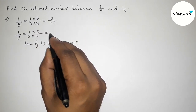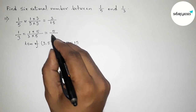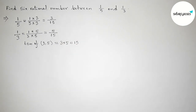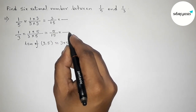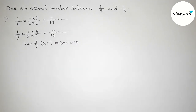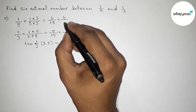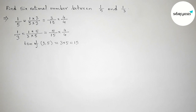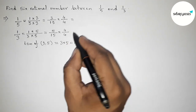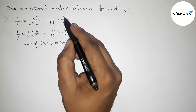So this gives us 3/15 and 5/15 — both denominators are now equal and both are 15. Next, to find 6 rational numbers, we take a number and multiply both fractions up and down. Taking 4 up and down for both.